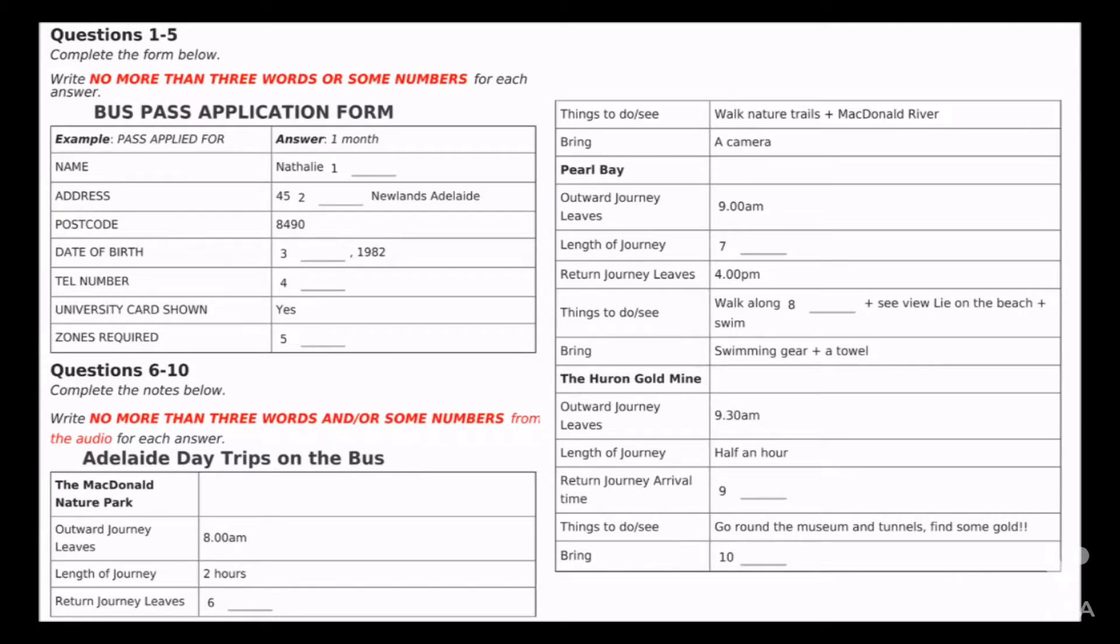And what's your address? 45 Forest Avenue, Newlands, Adelaide. Is that forest with one R or two R's? Just one. And what's the postcode, please? Oh, yes. It's 8490. Thanks.